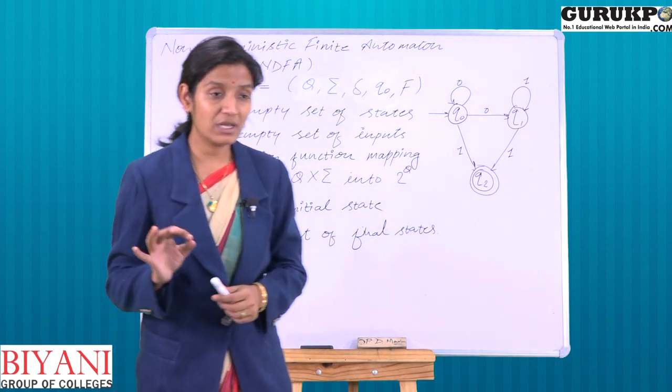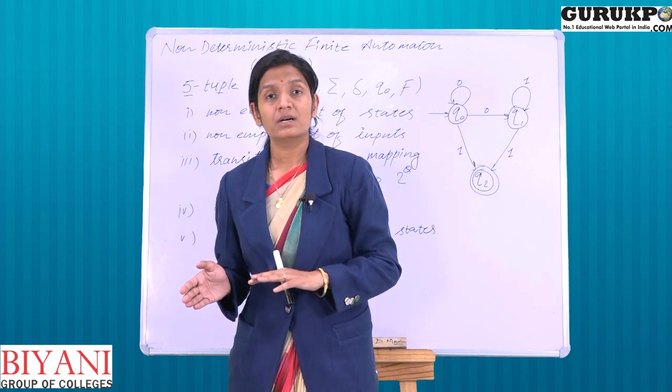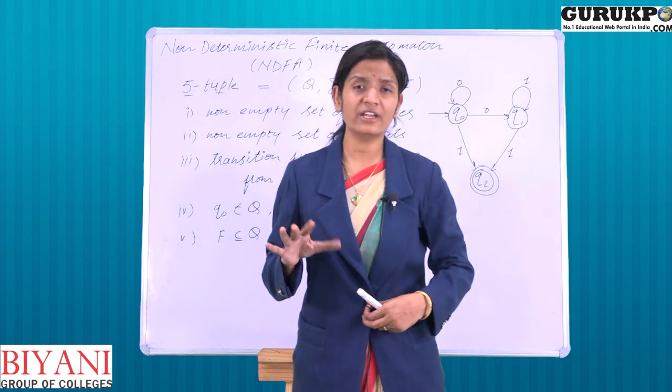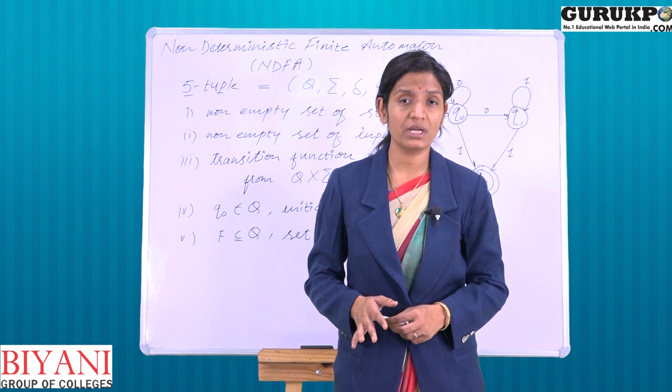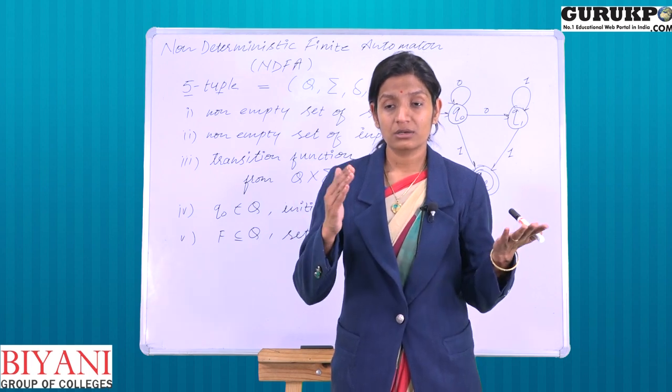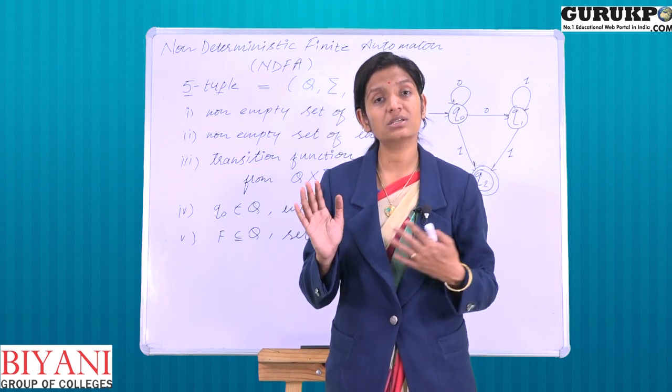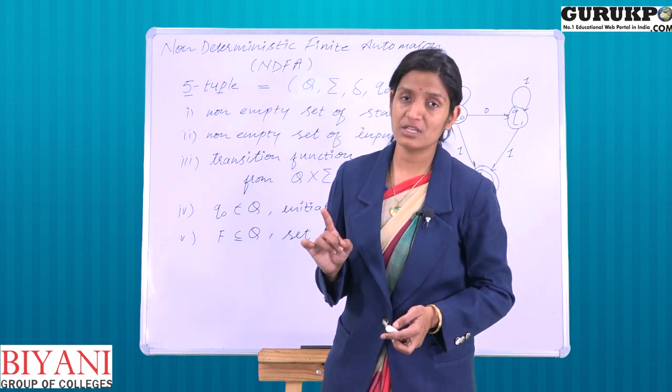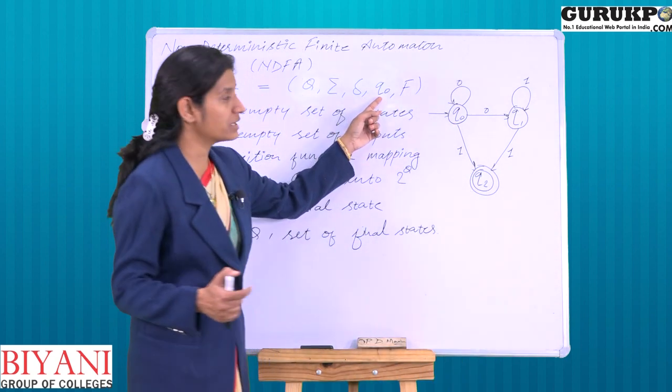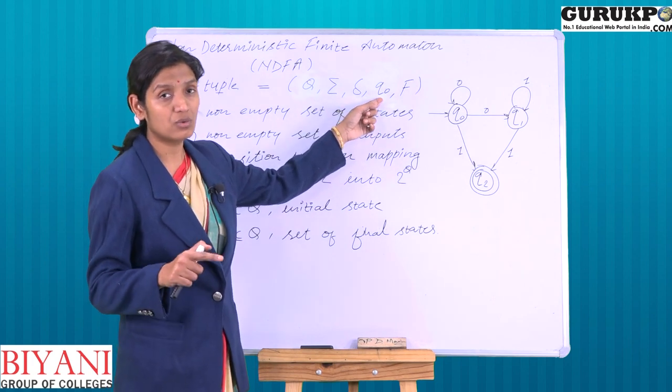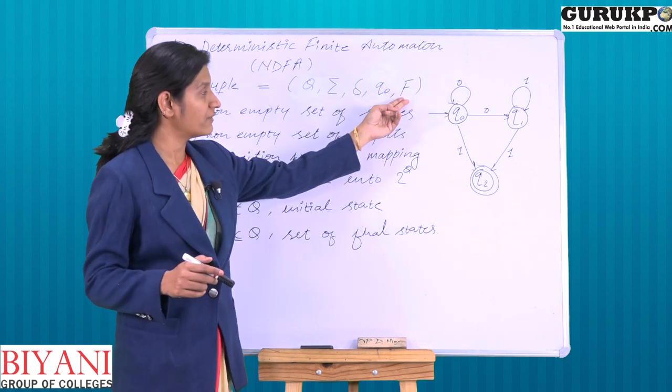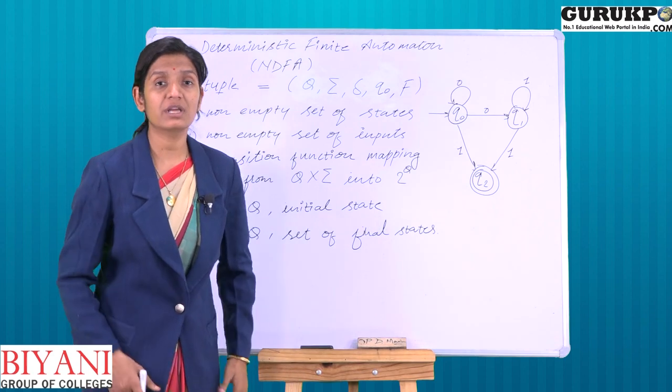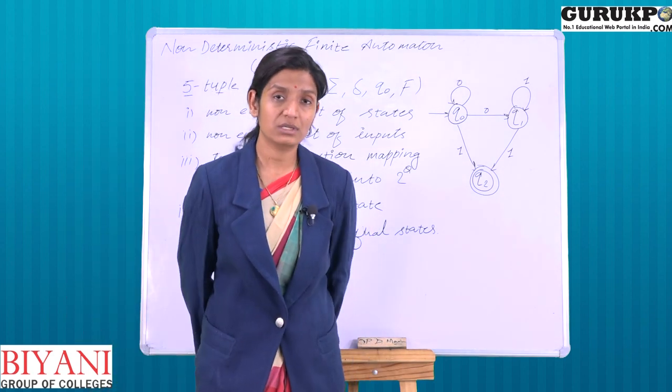We know that in a transition system and deterministic finite automata, the difference is that in the transition system there is more than one initial state, whereas in the automata there is only one initial state. Final state, we have represented using capital F because there can be more than one final state.